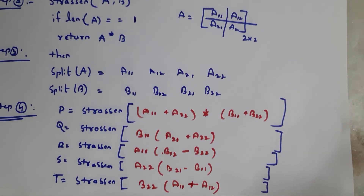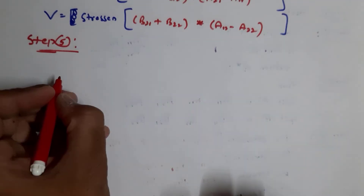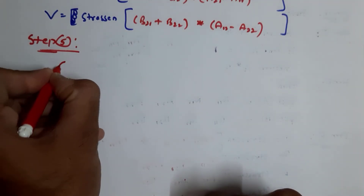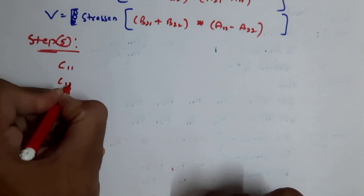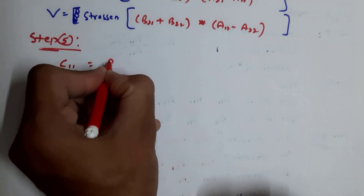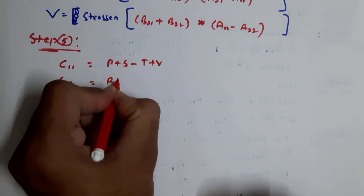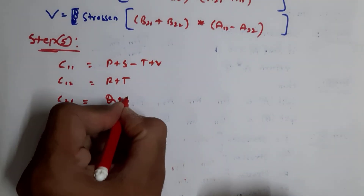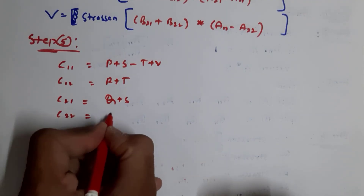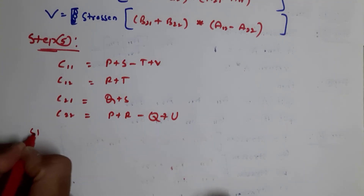Step 5: if you perform matrix multiplication on matrix A and matrix B, you need to store the result in matrix C. Matrix C contains C11, C12, C21, and C22. C11 = P + S − T + V; C12 = R + T; C21 = Q + S; C22 = P + R − Q + U.